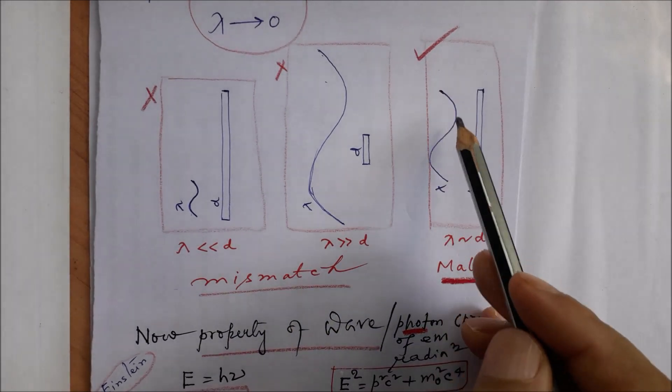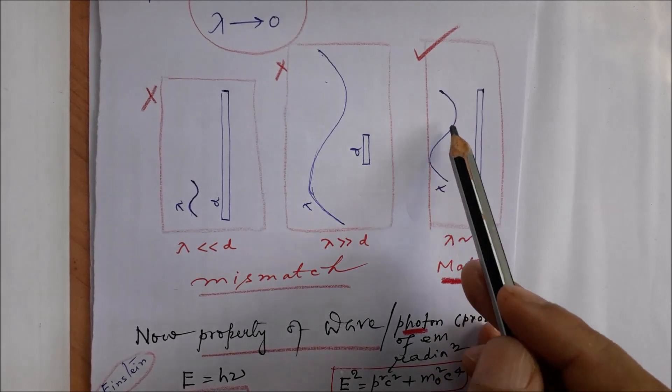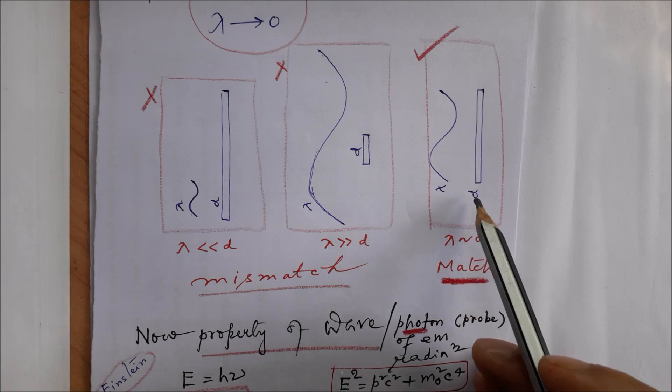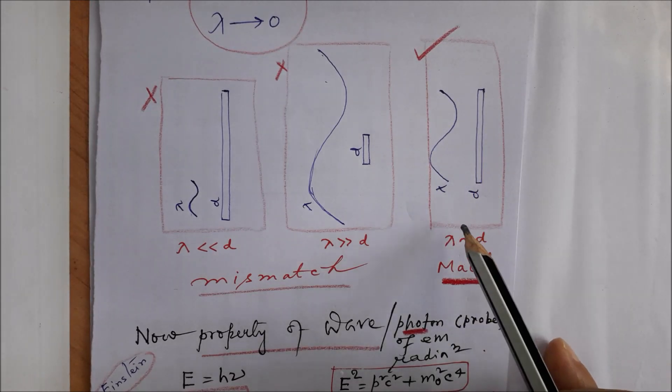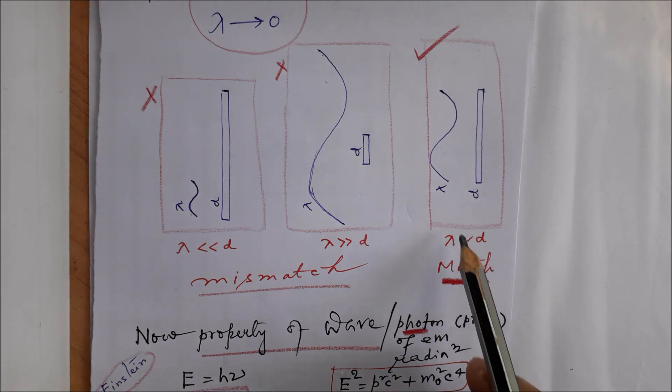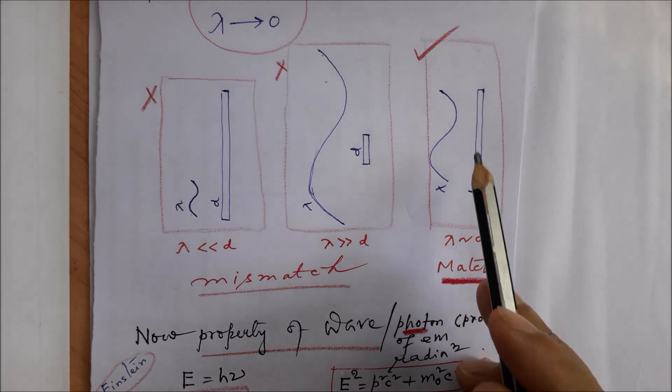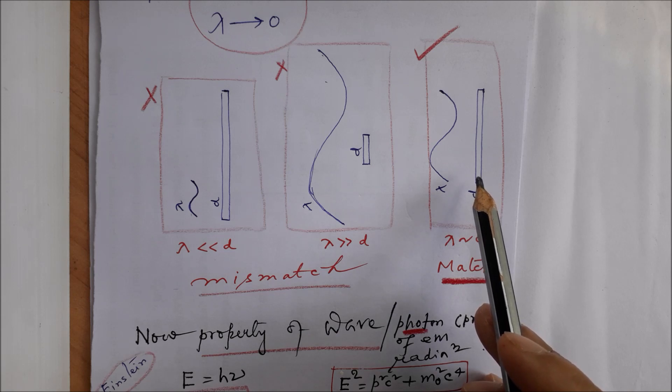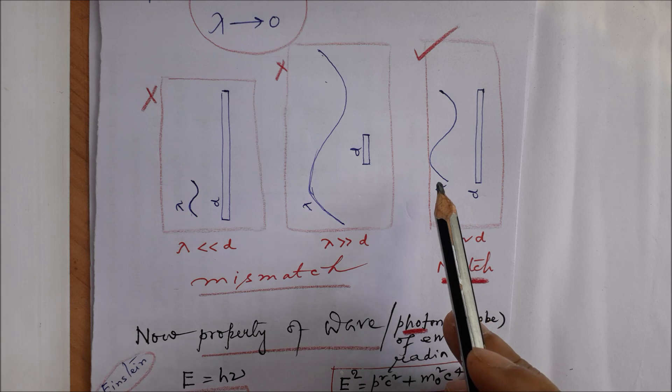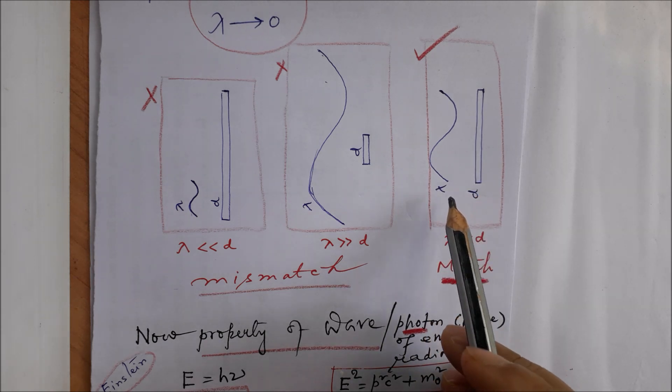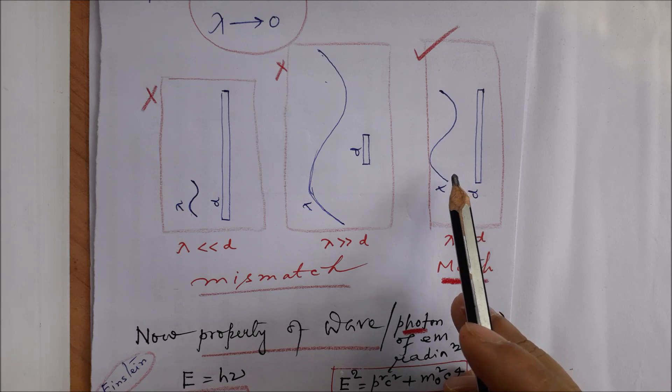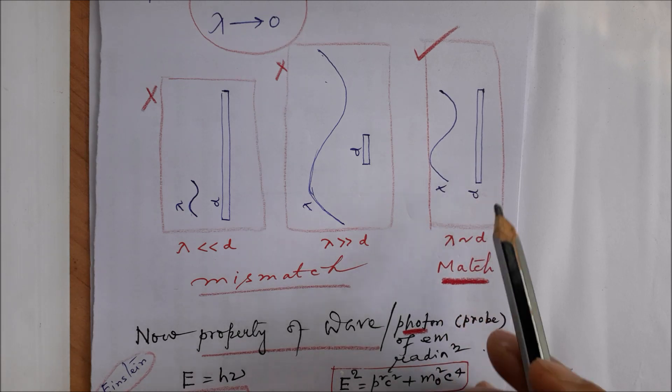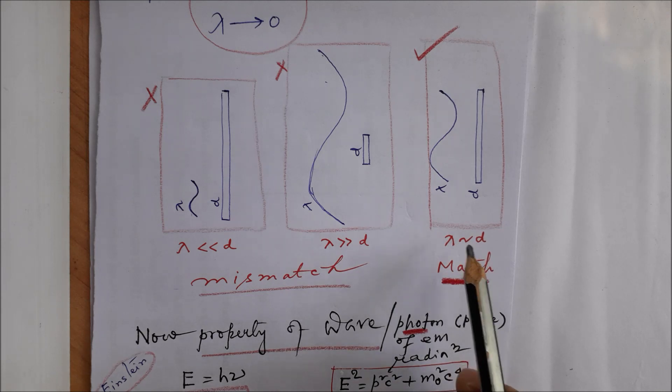While if λ, which is the wavelength of the investigating wave or radiation, is of comparable dimension to the particle or system to be investigated—so this is the case of λ of the order of d—then it is a perfect match. Here λ being comparable to the size or extension of the object, this λ will be able to faithfully probe the object. And in full confidence, it will be probed or investigated in its entirety and fully, and nothing will be missed or left unnoticed. So λ of the order of d is, so to say, a made for each other situation.